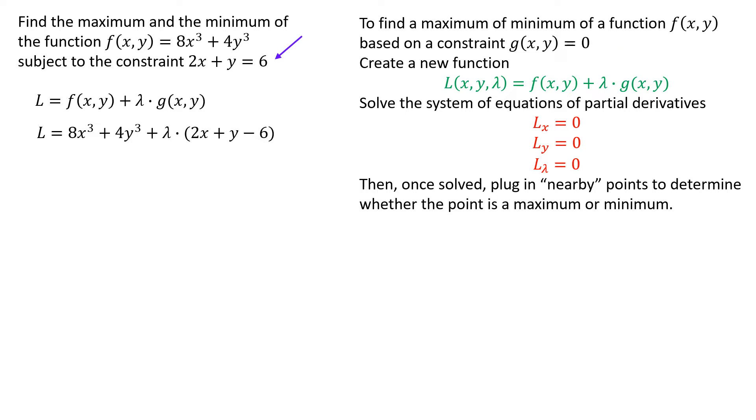Here's our constraint equation. If we set it equal to zero, then g is the function on the left side of that. So now what we'll do is we will put the g function that we found here into our Lagrange equation. Here you'll see that I did some basic algebra, distributed the lambda.